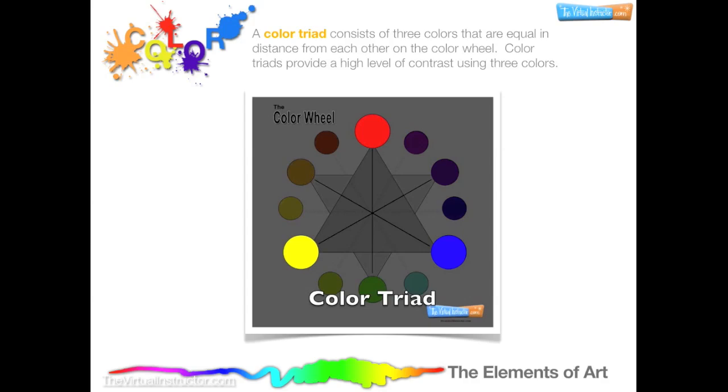A color triad consists of three colors that are equal in distance from each other on the color wheel. Color triads provide a high level of contrast using just three colors. An example would be the primary colors. Another example would be the secondary colors.